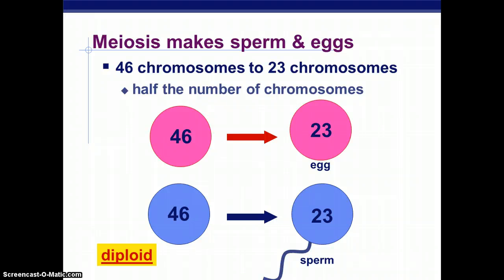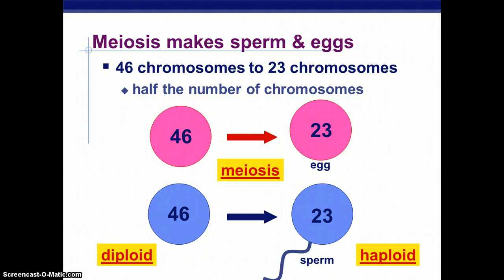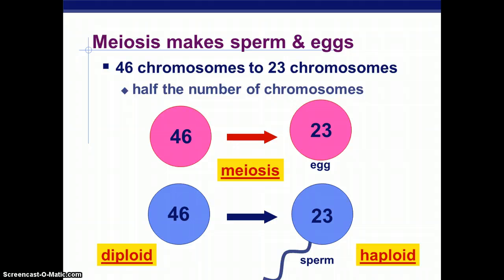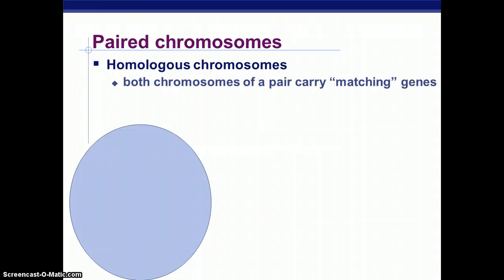On the left are diploid cells — they have two copies of each chromosome. On the right are haploid cells, which have only one copy of each chromosome. To get from diploid to haploid, you undergo meiosis. Each of these pairs is called homologous chromosomes, which indicates that both chromosomes have the same pair of matching genes.